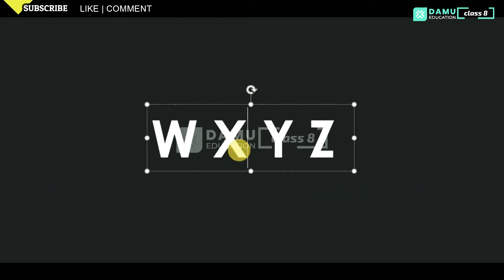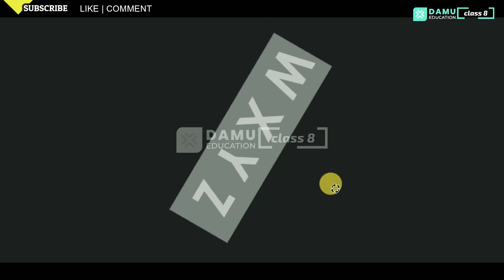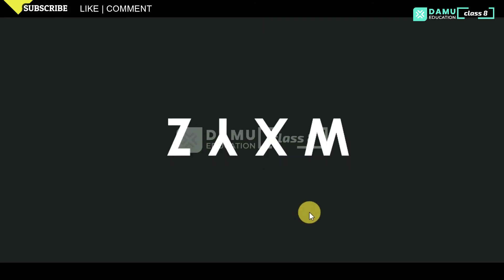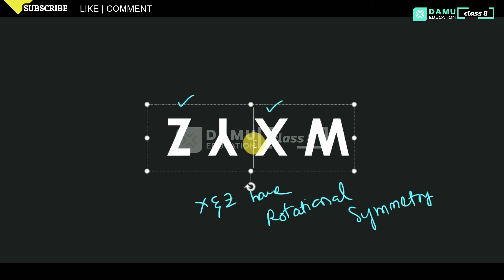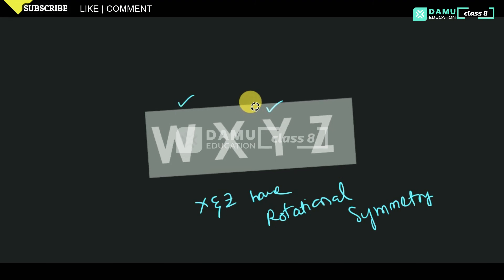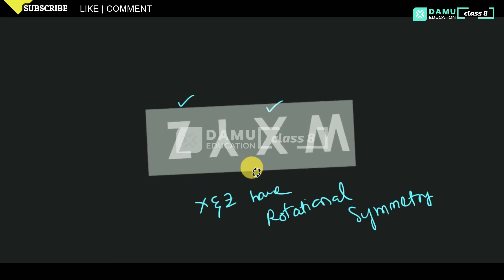For W, X, Y, Z — rotating these. X and Z will have rotational symmetry because after rotating we are getting the same letters. So X and Z have rotational symmetry.